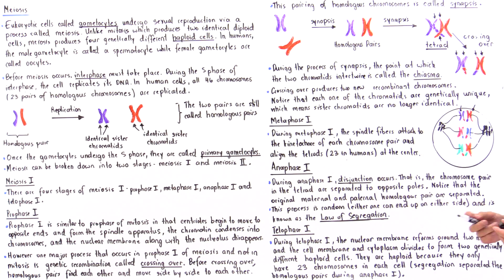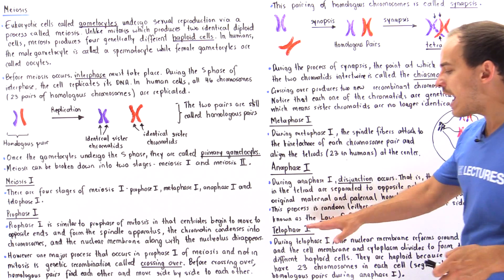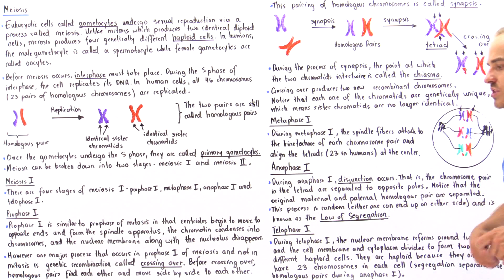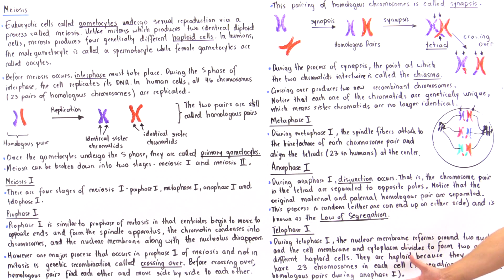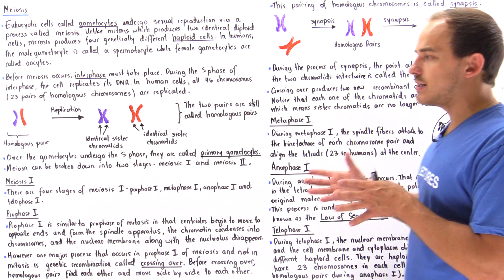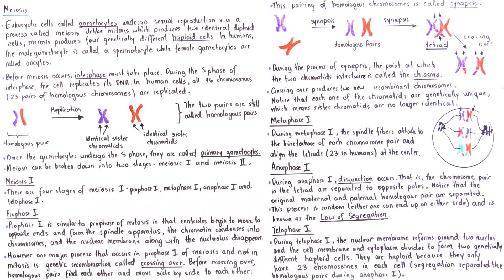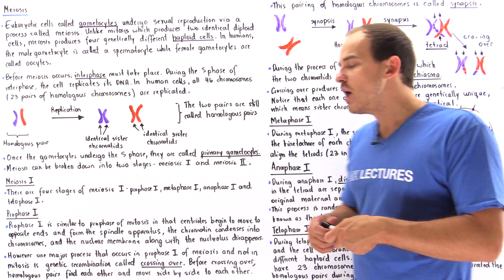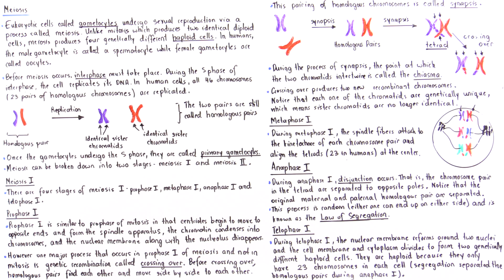We'll talk more about the law of segregation when we get into genetics. Following anaphase 1, we have telophase 1 of meiosis. During telophase 1, the nuclear membrane begins to reform around each set of chromosomes, forming two nuclei on the left and right sides of the cell. At the same time, the nucleolus reforms, the spindles begin to deteriorate, and the cytoplasm begins to divide — so cytokinesis begins to take place.